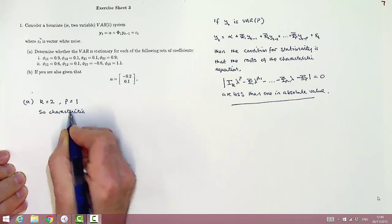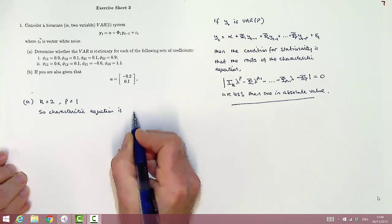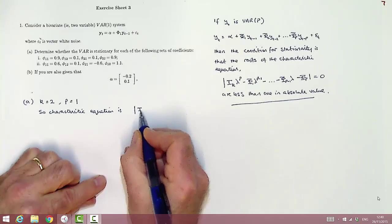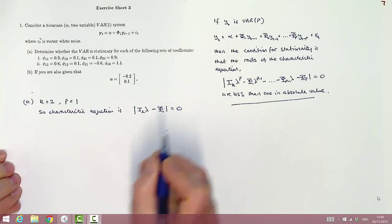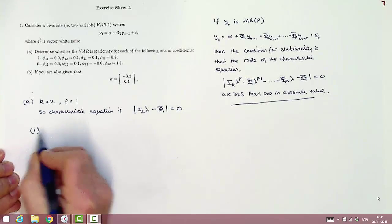So reading off from what we just developed on the right-hand side here, that general condition actually simplifies to quite a straightforward form. With p equal to 1 and k equal to 2, we get that the characteristic equation has this very simple form.